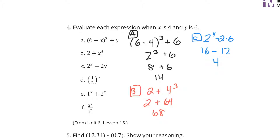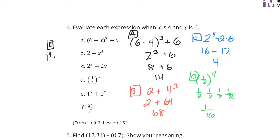For D: one half to the fourth power is one half times one half times one half times one half. 1 times 1 times 1 times 1 is 1, and 2 times 2 times 2 times 2 is 16, so you get one sixteenth. For E: you get 1 to the fourth plus 2 to the sixth. 1 to the fourth is 1. 2 to the sixth is 2 times 2 times 2 times 2 times 2 times 2, which is 64. 1 plus 64 is 65.